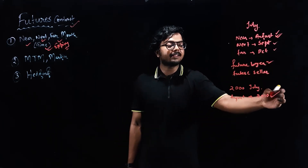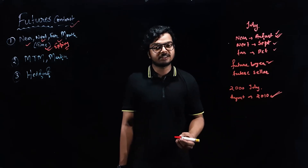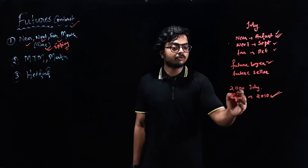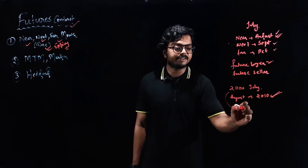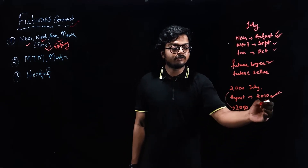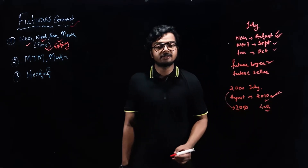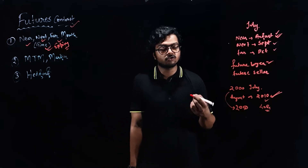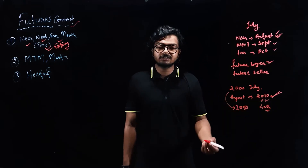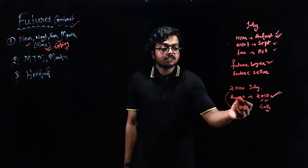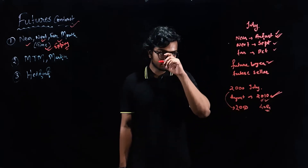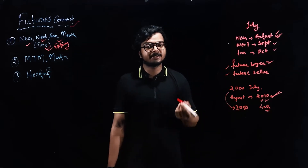So you are saying that in future, you would be buying Reliance shares at 2010. Now imagine that in August, the Reliance price moved from 2000 to say 2050. In this case, you would be making a profit of 40 rupees. This is how the futures contract works. And the seller thinks that in August, the price would be below 2010. This is the simple future buyer and seller's perspective.